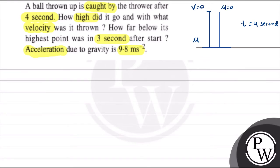When we throw a ball upward with some initial velocity U, it reaches the top where final velocity V equals 0. Then the other motion starts in the opposite direction. In this second phase, the initial velocity is 0. The ball travels height H going up, which is Motion 1, and then comes back down, which is Motion 2.